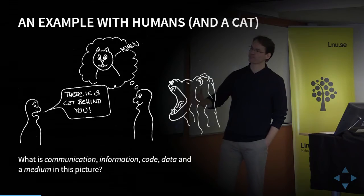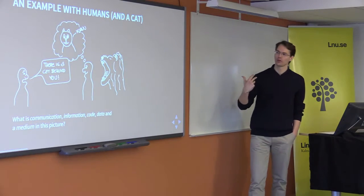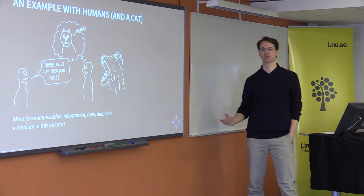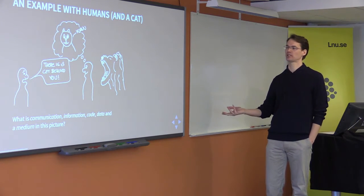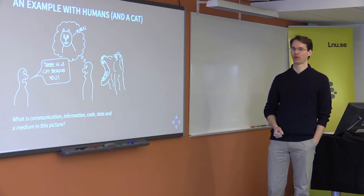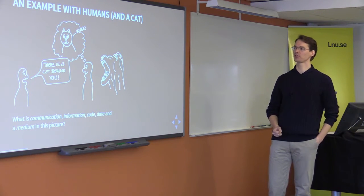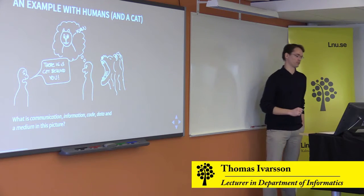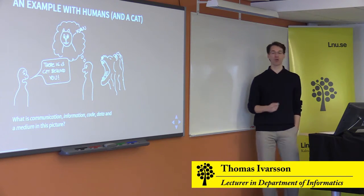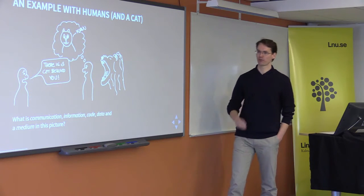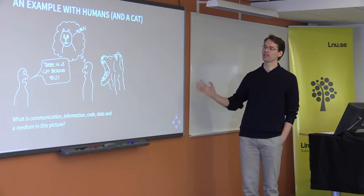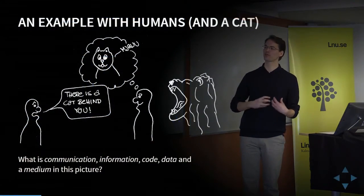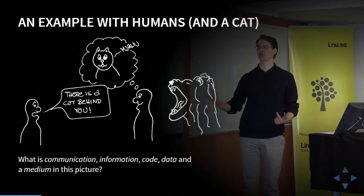Communication is probably the thing that the person on the left is trying to convey to the person on the right — and that is that there is some large cat behind him. That is the communication; that is the sharing of information. And as we can see, it is somewhat successful. The information is the same thing — the information is that the cat, or lion, is behind the man. And the communication is trying to convey that information from the person on the left to the person on the right.